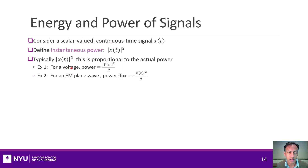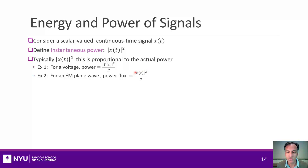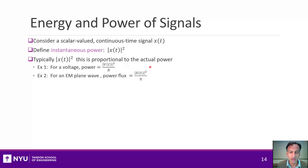For example, if x(t) is the voltage, the instantaneous power is the voltage squared over the resistance. Or if it's an EM plane wave, the power flux is proportional to the electromagnetic field squared divided by the characteristic impedance of the medium.